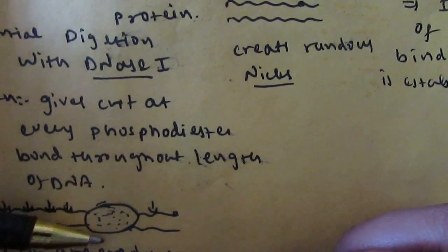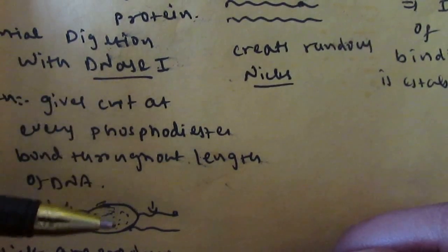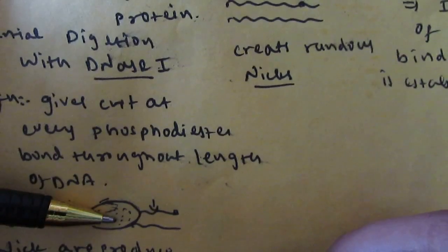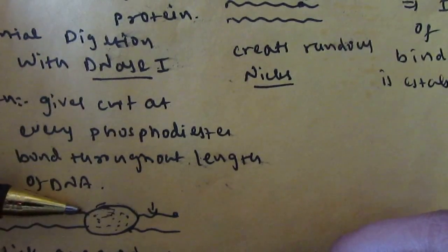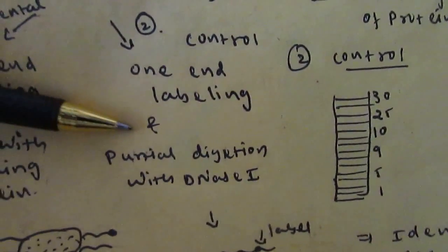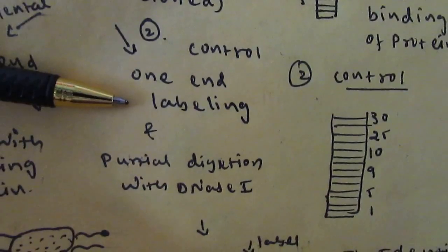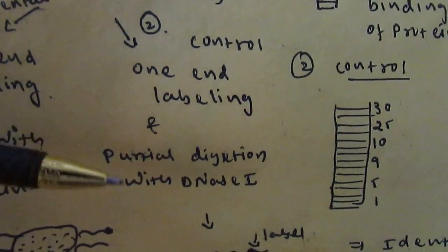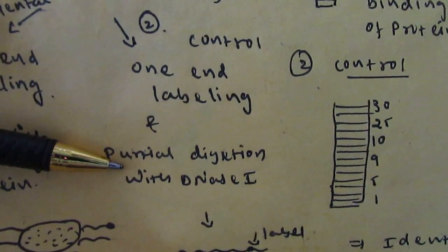In the control sample, after end nucleotide labeling, it is directly partially digested with DNase I enzyme because in the control sample, binding protein is not added. So it will randomly cut at the end of all the phosphodiester bonds